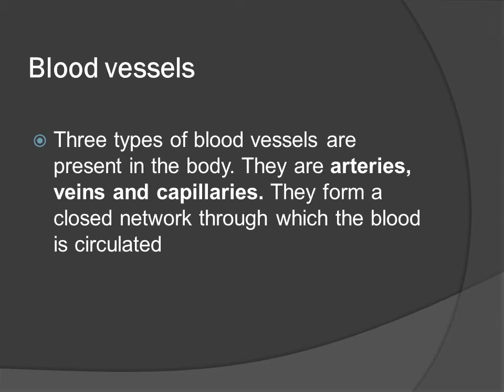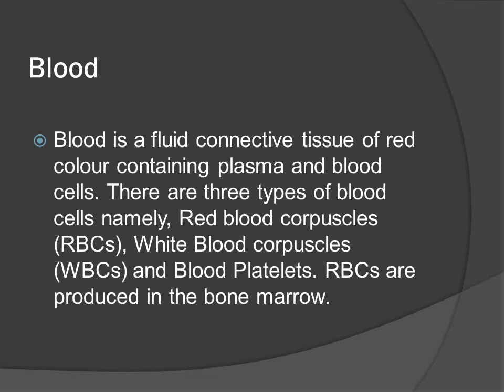There are three types of blood vessels present in the body: arteries, veins and capillaries. They form a closed network through which blood is circulated. Blood is a fluid connective tissue of red color containing plasma and blood cells. There are three types of blood cells: red blood corpuscles (RBC), white blood corpuscles (WBC) and blood platelets. RBCs are produced in the bone marrow.